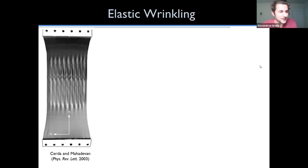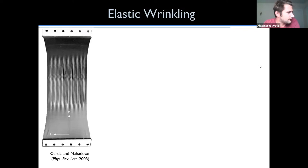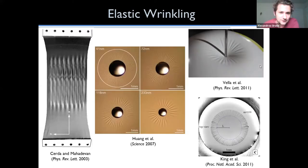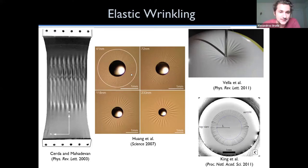I'll start with elastic wrinkling. There was a paper published in 2003 by Cerda and Mahadevan. They clamped a very thin elastic sheet and stretched it uniaxially, observing this beautiful symmetrical wrinkling pattern in the middle. This particular paper inspired a lot of new research in elastic wrinkling. Over the last 15 to 20 years there have been multiple studies — for instance, taking a very thin sheet, floating it on a bath of water, and adding a drop on top — producing beautiful wrinkling patterns that change morphology depending on the properties of the system.